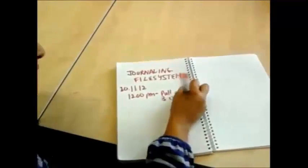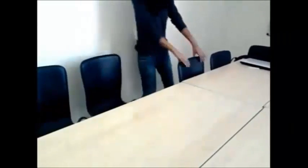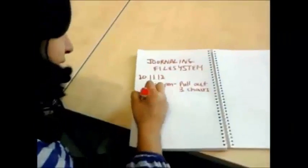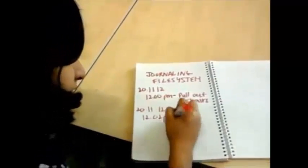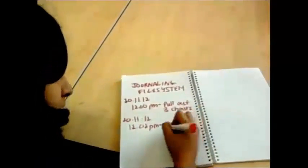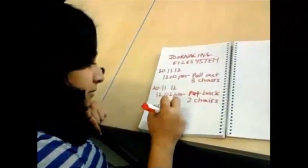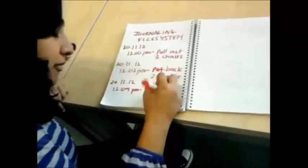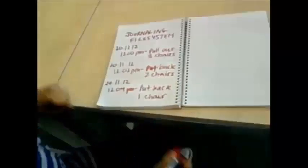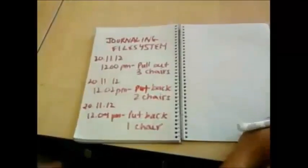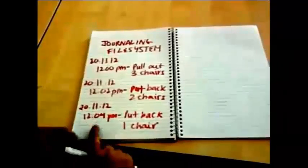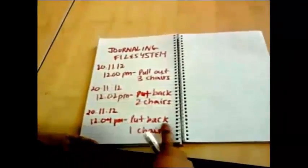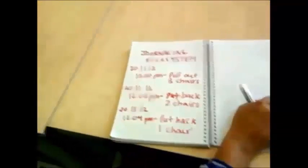In this case, the action is to pull out three chairs. Then the next entry, which again includes the date, time, and action, is to put in two chairs. Then the third entry is to put back one chair. But suddenly the power goes off — but have no fear, when the journaling file system is here! It basically reads the last entry and checks if the action has been performed or not. In this case it hasn't, so it does so. And tadaaa!